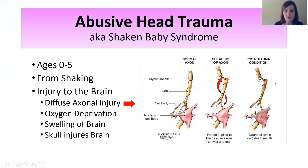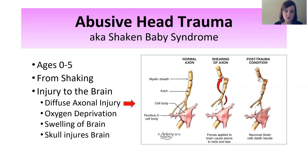Abusive head trauma — you may have already heard of it, or you might be familiar with another term: shaken baby syndrome. Shaken baby syndrome occurs when someone shakes a child or infant so hard that they injure their brain. Shaken baby syndrome is a type of abusive head trauma. It happens in children ages 0 to 4, when someone shakes the child so hard that they are causing physical damage to the brain at a cellular level.